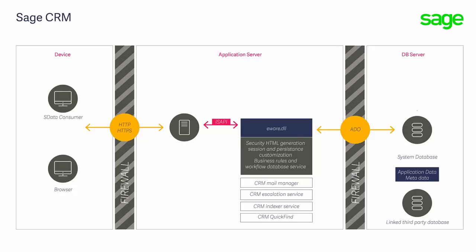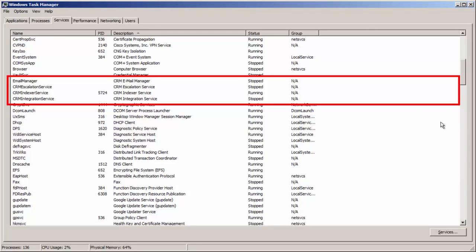There are a number of Windows services that are also installed on the web server that work alongside the eWare DLL and share its architecture. These are: the CRM Email Manager, which is responsible for the processing of inbound emails; the CRM Escalation Service, which controls notification SLA timings and escalation rules; the CRM Indexing Server, which enables the keyword search feature; and the CRM Integration Service, which supports ERP integration with certain Sage ERP software — used only in systems with Sage-developed integrations.